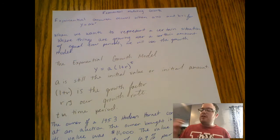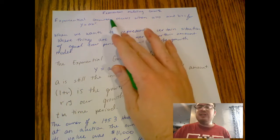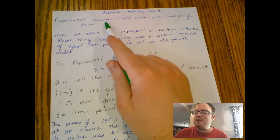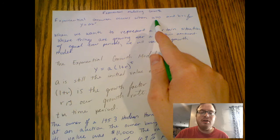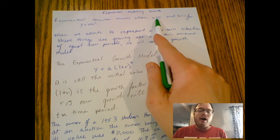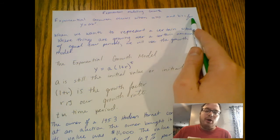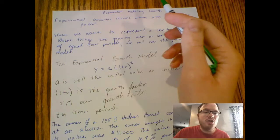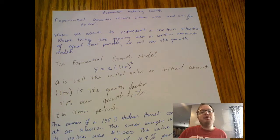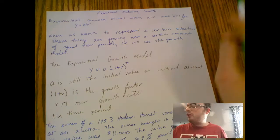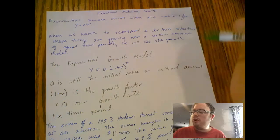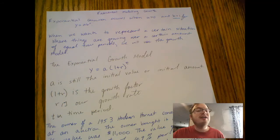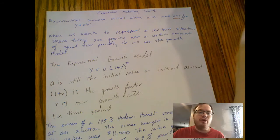Today we're going to be talking about extending our ideas of exponential functions and exponential growth. We've already reviewed this on Friday, but I want to review it again. Exponential growth occurs when a is positive, or a is greater than zero, and b is greater than one for y equals ab to the x. So exponential growth happens when b is greater than one. b has to be greater than one, it cannot be one and it cannot be less than one.